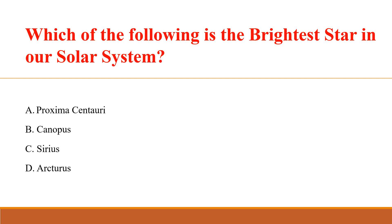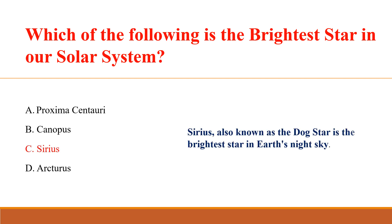Which of the following is the brightest star in our solar system? Answer: C. Sirius. Sirius, also known as the Dog Star, is the brightest star in Earth's night sky.